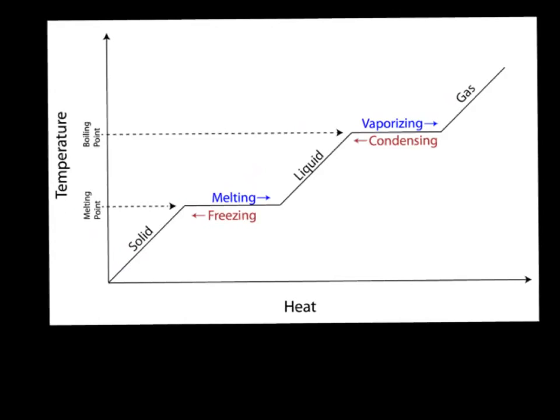If we look at another diagram, I've got this solid. If I'm going this way, my solid is turning into a liquid and I'm melting. If I'm coming downwards it's freezing. I've got my liquid, I'm vaporizing or condensing depending on which way I'm going, and this is a gas.